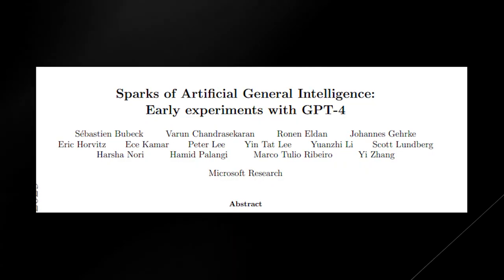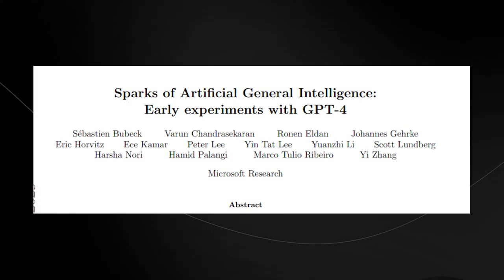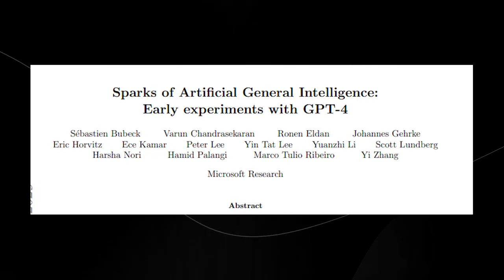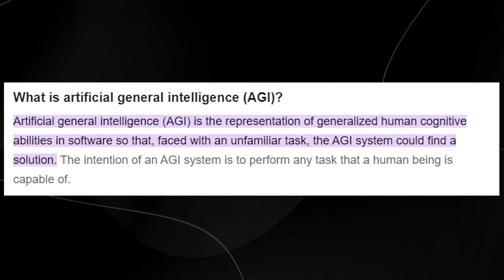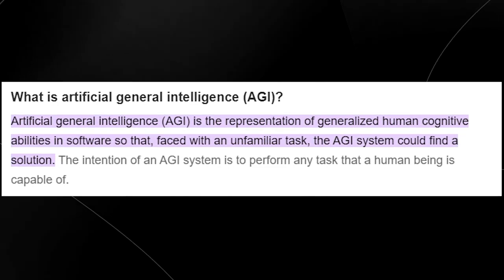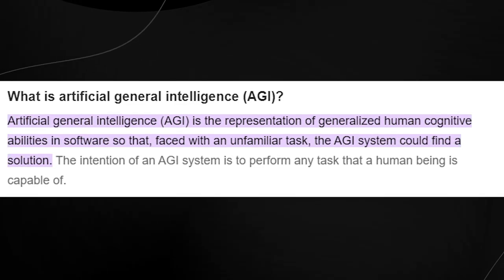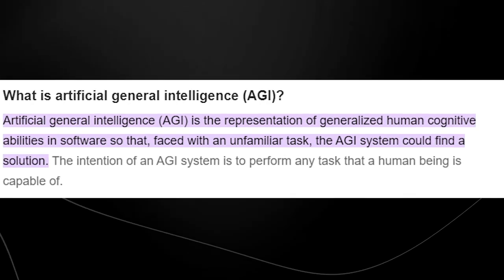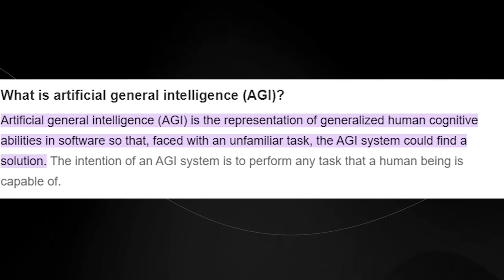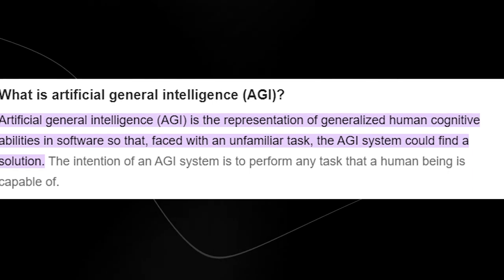Researchers at Microsoft recently released a paper discussing the sparks of artificial general intelligence in their early experiments with GPT-4. There are many different things in this paper, but one thing you need to understand is exactly what AGI is. AGI is essentially the representation of general human cognitive abilities so great that it can find a solution to any given problem, just like a human would.